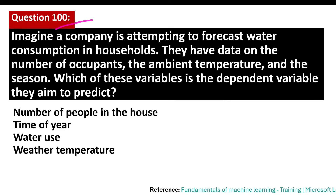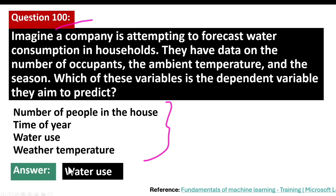Question number 100. Imagine a company is attempting to forecast water consumption in households. They have data on the number of occupants, the ambient temperature, and the season. Which of these variables is the dependent variable they aim to predict? The correct answer is water use. Water use is the label value that you want to predict. In machine learning, two fundamental concepts are critical: data labels and features. These terms are pivotal in structuring datasets and training models to derive valuable insights and predictions.